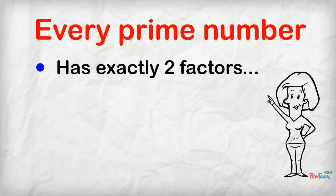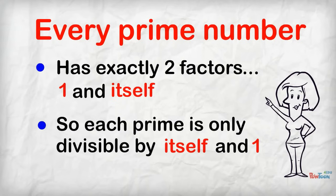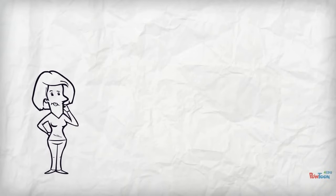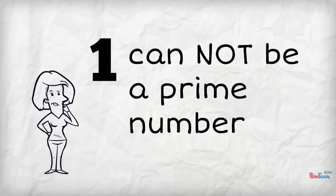Every prime number has exactly two factors and they are 1 and the number itself. Or to put this another way, each prime number is only ever divisible by itself and 1. This means that 1 can't be a prime number.